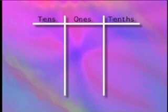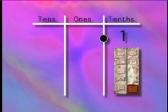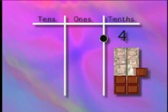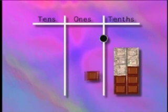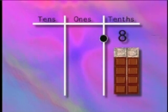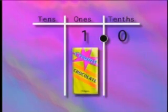We have a special place to record tenths, and we use a decimal point between the ones and tenths to show us their place. One tenth, two tenths, three tenths, four tenths, five tenths, six tenths, seven tenths, eight tenths, nine tenths — and one more makes ten tenths. Ten tenths make one whole.